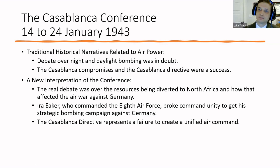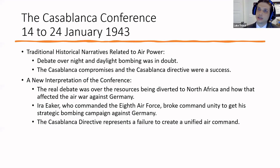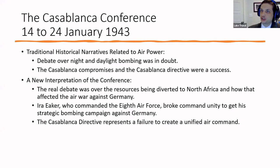Eaker's solution was essentially: let's all go our own separate way — Bomber Command can do night bombing, the Eighth Air Force can do strategic bombing against Germany, and the Mediterranean air forces can support ground forces. Everybody liked this solution, but the problem is it's an agreement to disagree — we can't work together, so let's not. That means no one is concentrating on a single objective. In 1943, some commanders ask for help but go back to the Casablanca documents saying they have no obligation to support one another.